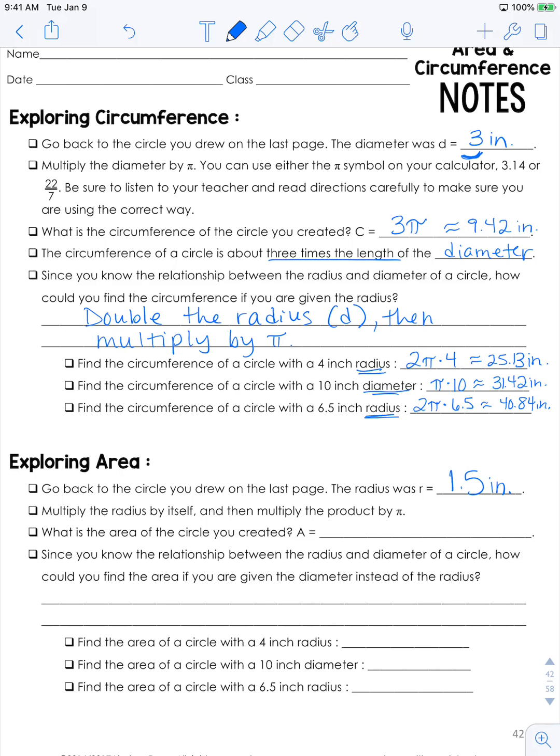By multiplying 1.5 by itself, you are squaring it. So A is equal to π times the radius 1.5 squared. And that is going to be 7.07 inches squared. Don't forget to square your units there.